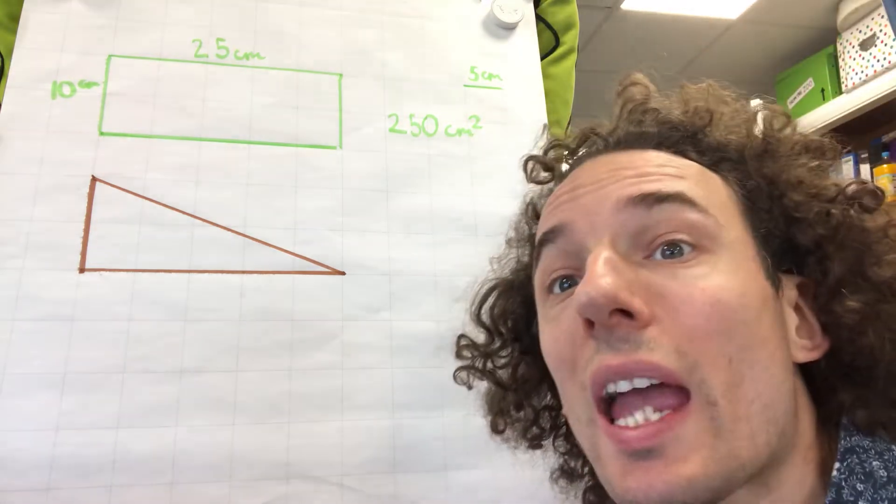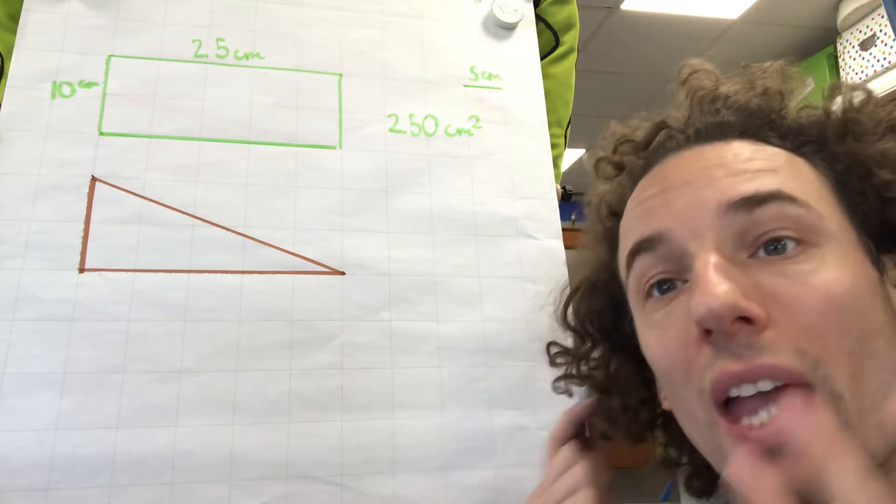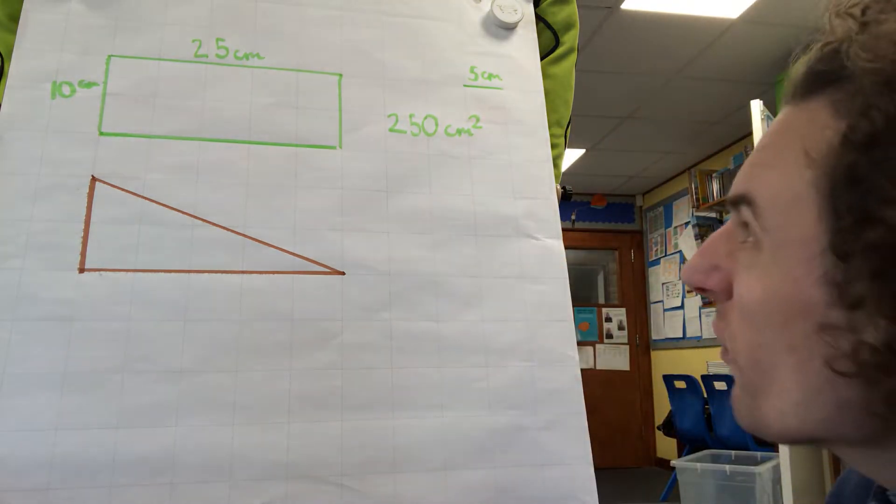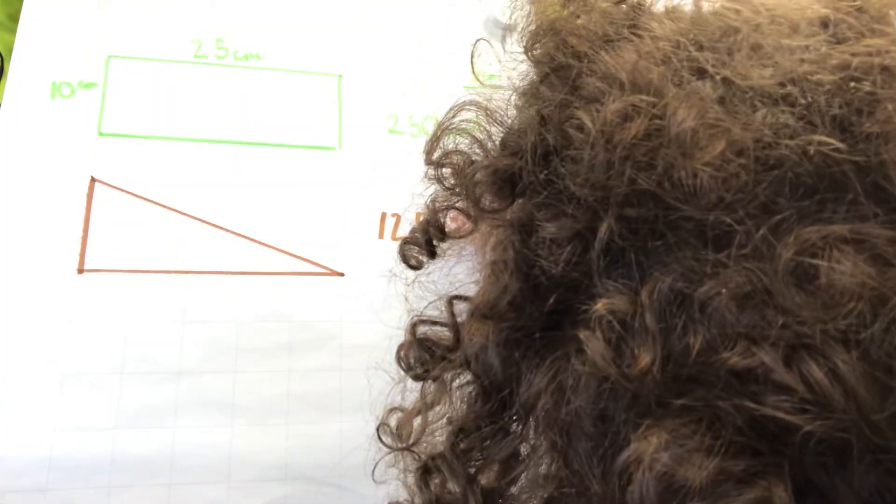Now, to find the area for our triangle, we would half that because the triangle is half the area of the rectangle. So half of 250 centimetres squared would be 125 centimetres squared.